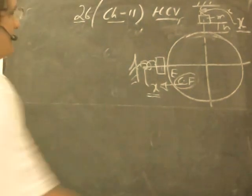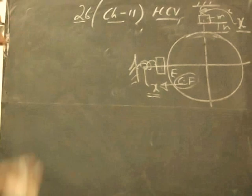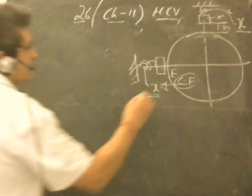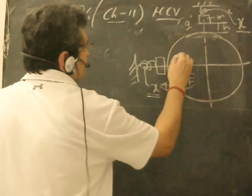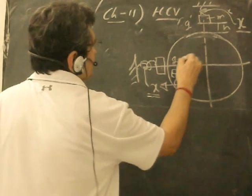Now before we go to that problem, we should find out the expression for the value of g at height H. Let it be g' and let the value of g at the surface be g₀ which is 9.8.